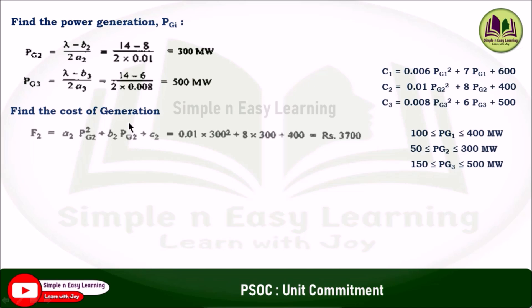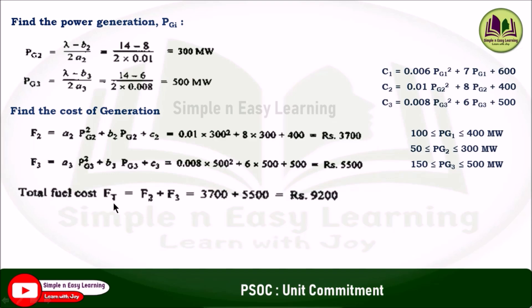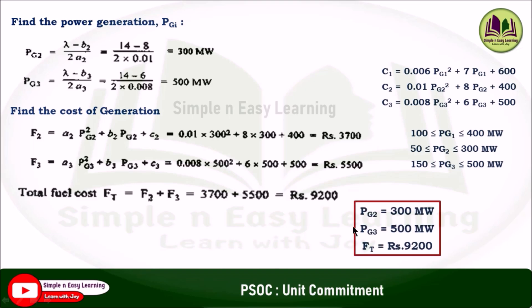Find the cost of generation. For the second unit, f2 equals 0.001 pg2 squared plus 8 pg2 plus 400. Substituting pg2 equals 300 gives rupees 3700. For the third unit, f3 equals 0.008 pg3 squared plus 6 pg3 plus 500. Substituting pg3 equals 500 gives rupees 5500. Adding these, the total fuel cost ft equals f2 plus f3 equals rupees 9200. Conclusion for case 4: pg2 equals 300 megawatt, pg3 equals 500 megawatt, total fuel cost is rupees 9200.